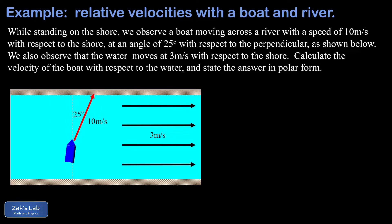So this time we know the velocity with respect to the shore. We're also told the water is moving at 3 meters per second with respect to the shore — so we know how fast one reference frame is moving with respect to the other. What we want this time is the velocity of the boat with respect to the water, that is, the velocity with respect to the moving reference frame. We want to state that answer in polar form — a magnitude and an angle.